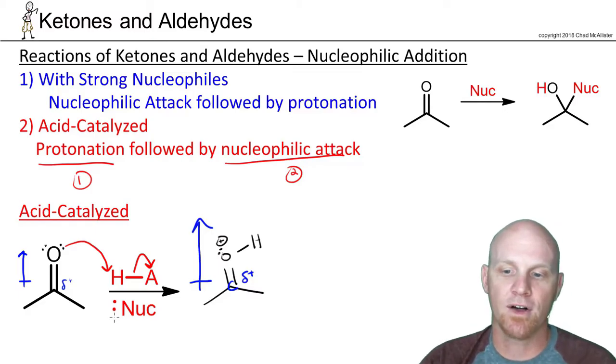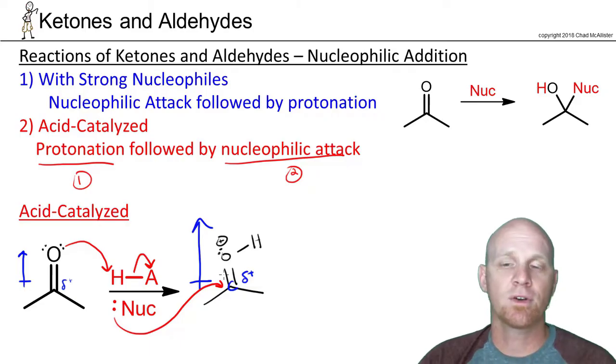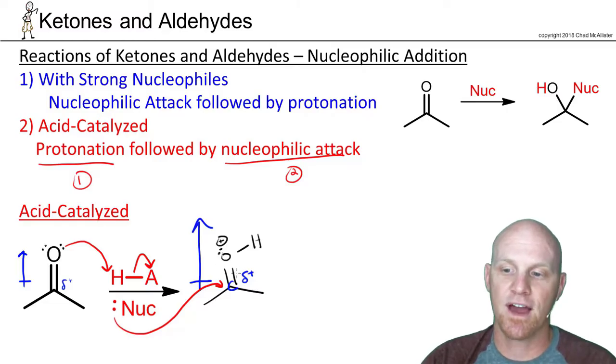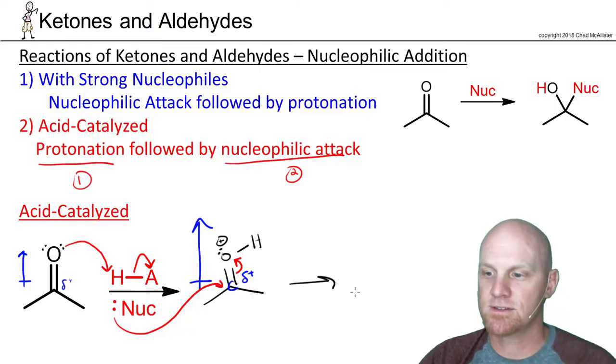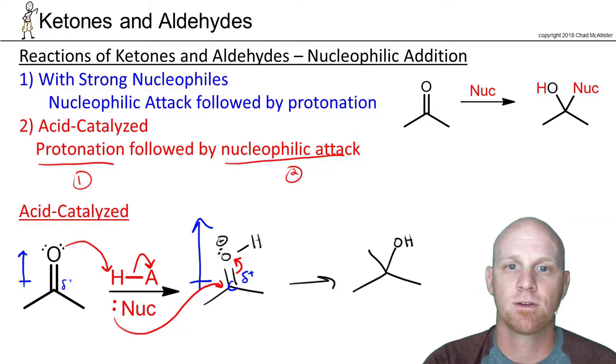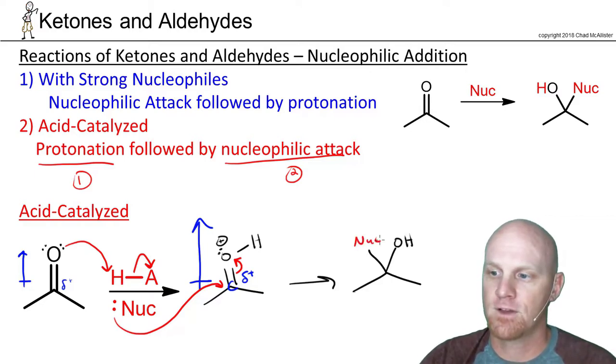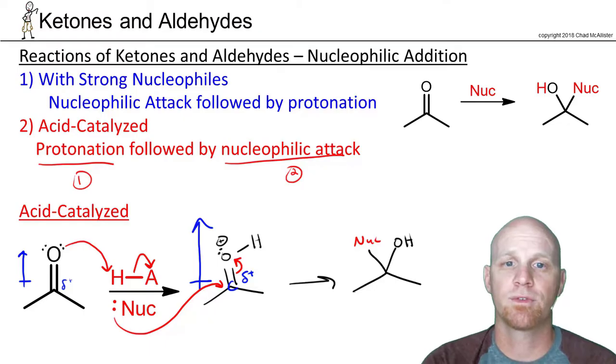And so now with a weak nucleophile, a weak nucleophile now can attack the carbonyl. So strong nucleophiles don't need a protonated carbonyl to attack, but weak ones often do. And so we protonate first, and then we do nucleophilic attack. And then just like before, we'll kick the pi electrons up to the oxygen. And so in this case, now we'll have our nucleophile attached. We'll have an OH, and that's generally how it works.